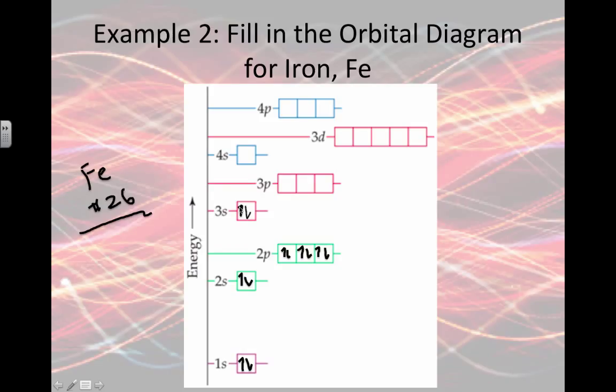The S gets to have 2, the p gets singly occupied first, and then we fill in the next ones. One electron spinning up and one spinning down. We're almost done because I'm up to 20 electrons now. I have only 6 more. So I put 1, 2, 3, 4, 5, and I need one more to fill in 3d so I can have 26 total electrons.